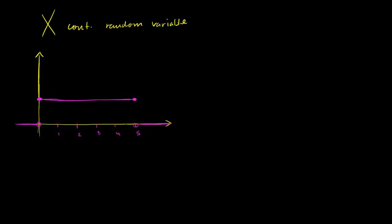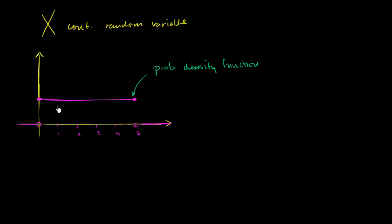So this right over here, when we're talking about a continuous probability distribution, can also be referred to as a probability density function, sometimes called a PDF. And in this case, you might notice it is a uniform probability density function.